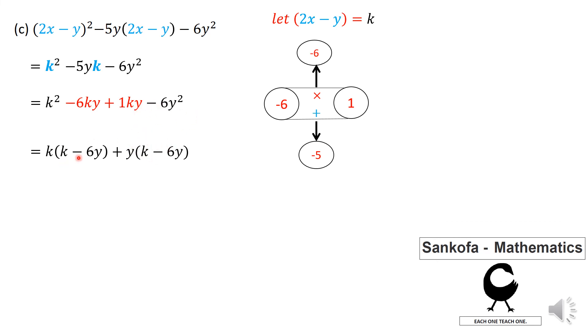So eventually you end up with the same common factor on both terms. So k minus 6y plus k plus y. But we don't want our equation, our trinomial rather, in terms of k.